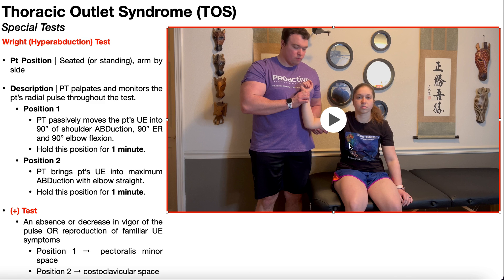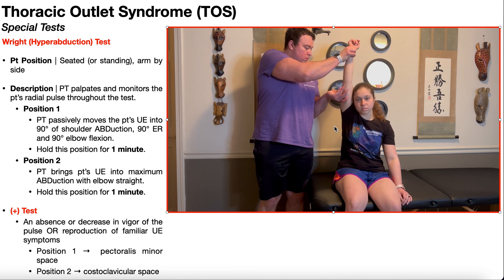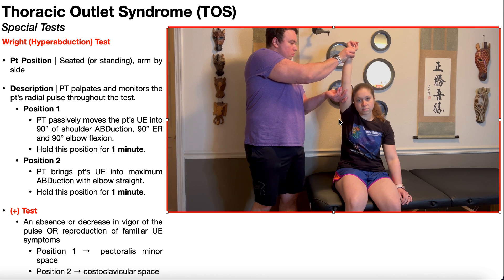Once the PT has monitored the patient's radial pulse for one minute in position one, the PT is then going to passively bring the patient into position two. To get to position two, the PT is going to bring the patient's upper extremity into maximum shoulder abduction with the elbow straight — basically lifting the arm as far as possible above the head. You're going to hold this position for one minute, assessing for signs and symptoms and monitoring the vigor or strength of the radial pulse.